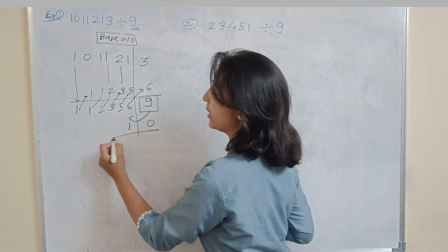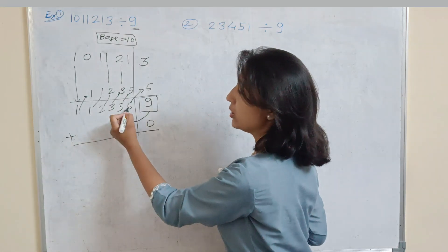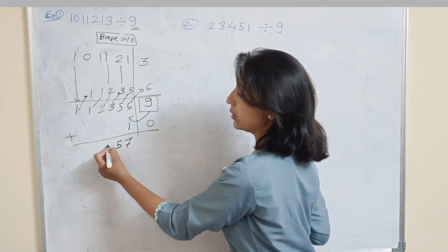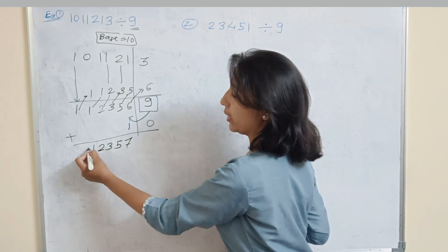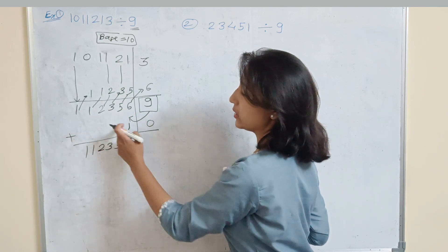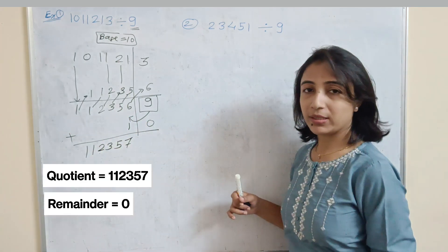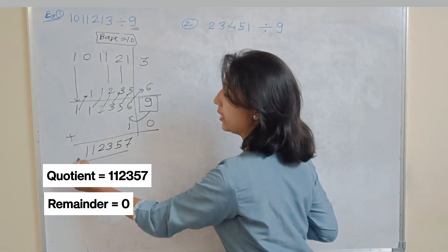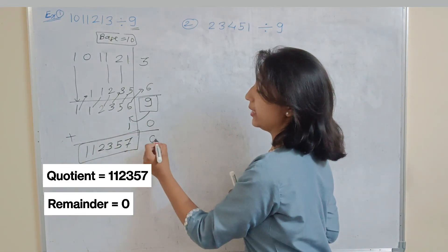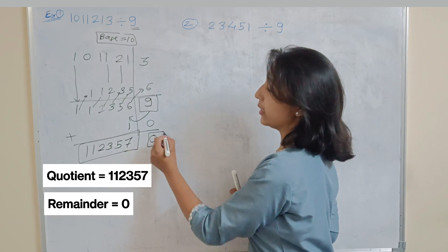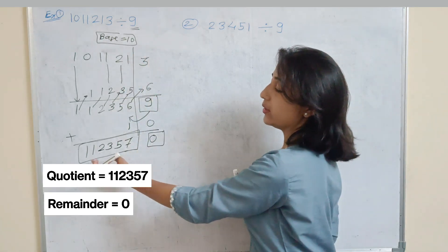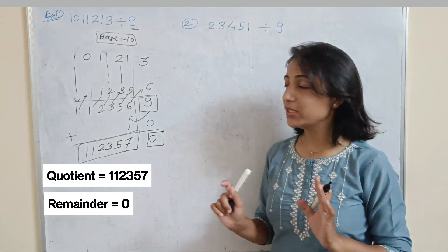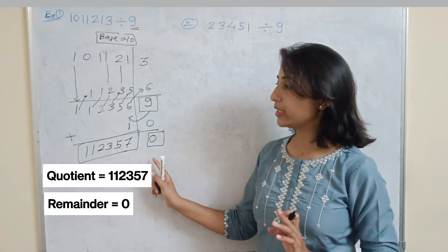So we add 1 to the last quotient digit: 6 plus 1 is 7. The quotient digits are 1, 1, 2, 3, 5, 7 and the remainder is 0. I hope this first concept is clear.